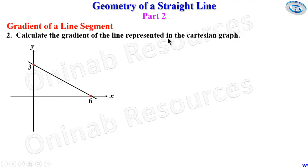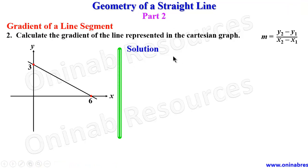We then go to problem 2. Calculate the gradient of the line represented in the Cartesian graph. The line has intercepts on x-axis and y-axis. In our solution we still have our formula, and we need to get the coordinates of the two points.